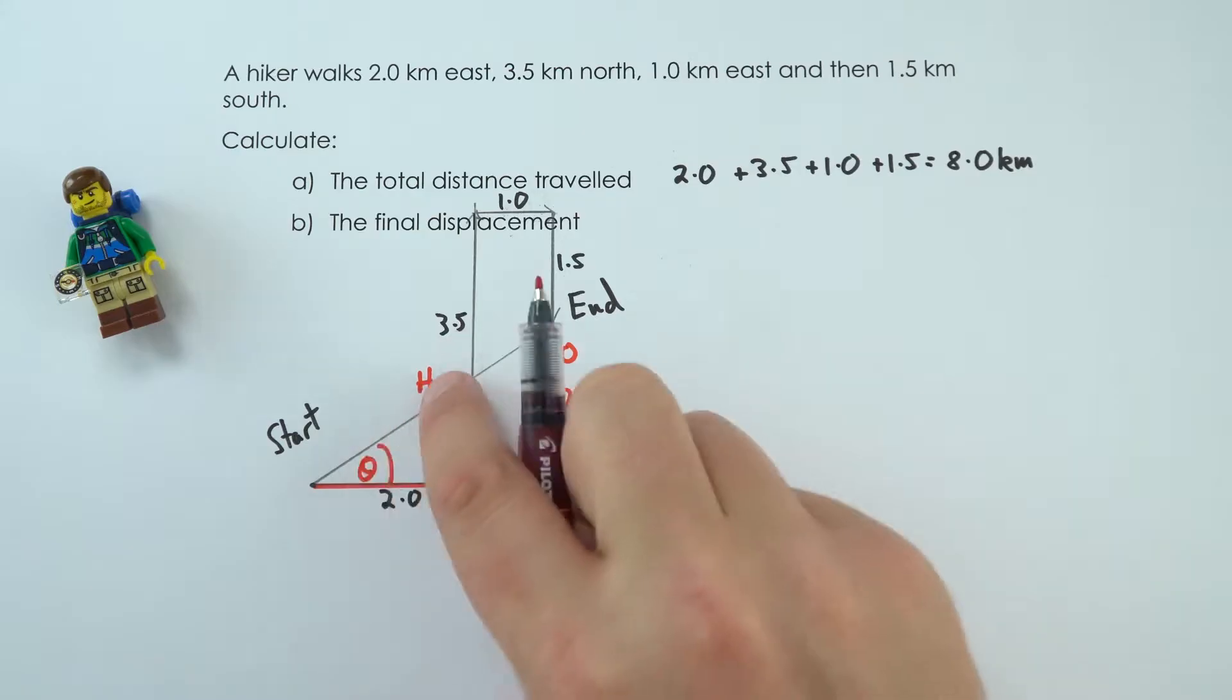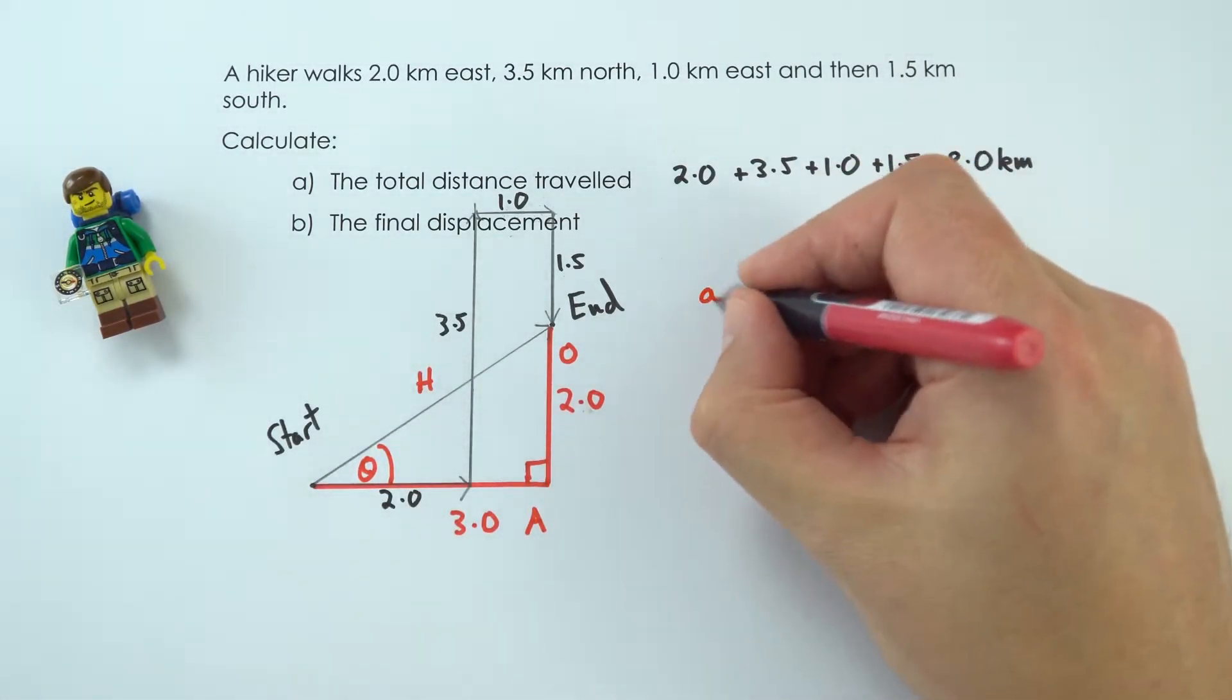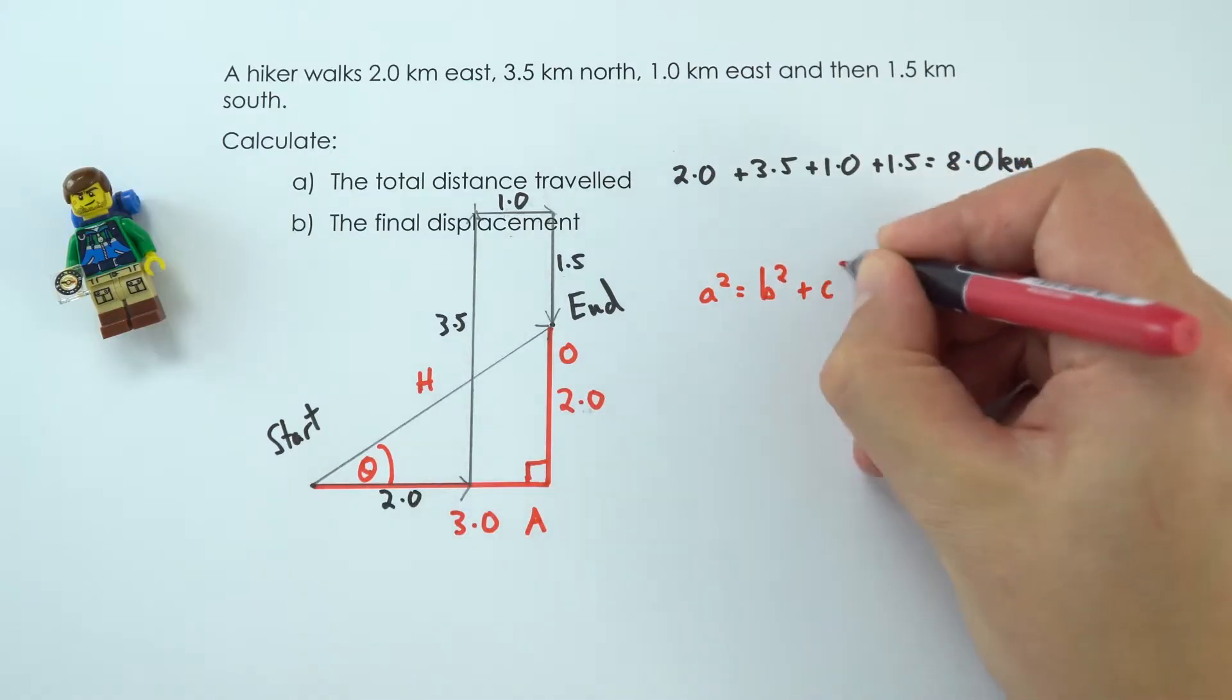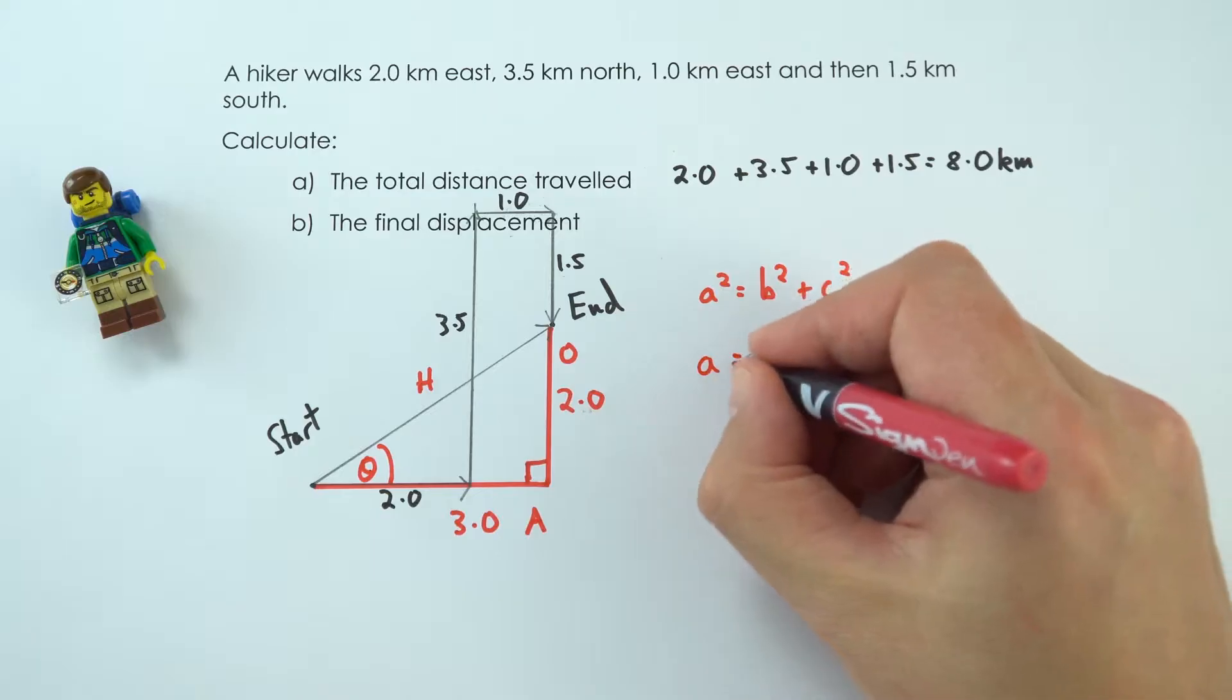First of all, we want to find out the distance, which is the hypotenuse. To work that out, we're going to use Pythagoras. So a squared is equal to b squared plus c squared, and that means a, this long side here, is going to be equal to the square root of 3 squared plus 2 squared.